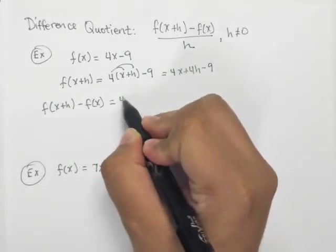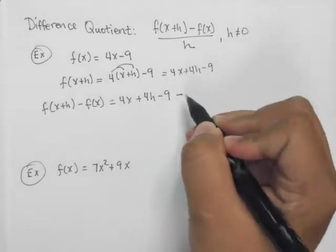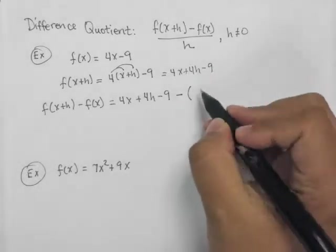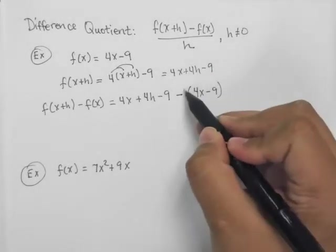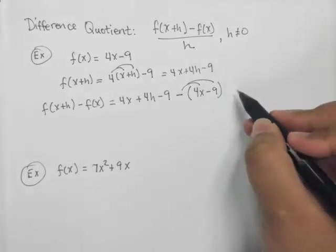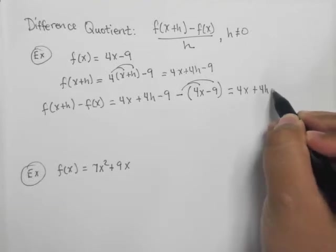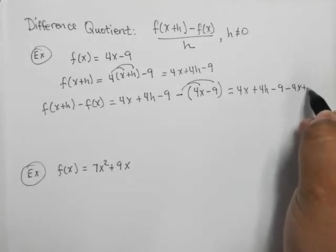We get 4x plus 4h minus 9 minus, now I'm going to subtract f of x. So I'm going to put it in parentheses, 4x minus 9. So now my trick here is to do some simple distribution. And I get 4x plus 4h minus 9 minus 4x plus 9.